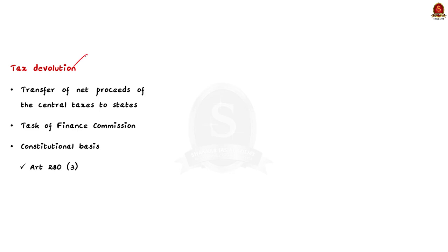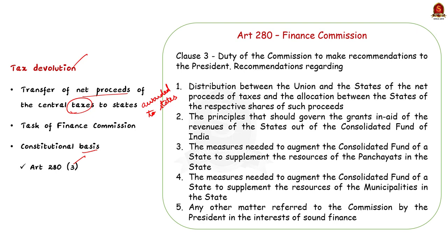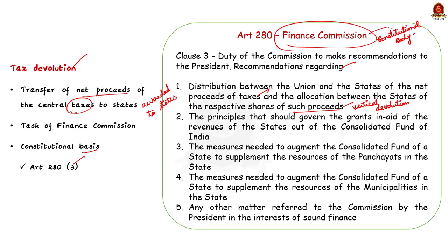Tax devolution is a portion of net proceeds of central taxes that are awarded to the states — in simple words, the amount of money given to states from the center's taxes and duties. Tax devolution is one of the core tasks of the 15th Finance Commission under Article 280 Clause 3 of the Indian Constitution. Article 280 Clause 3 states it shall be the duty of the commission to make recommendations to the president regarding the distribution between the union and states of net proceeds of taxes — covering both vertical devolution (center to states) and horizontal devolution (distribution between states).